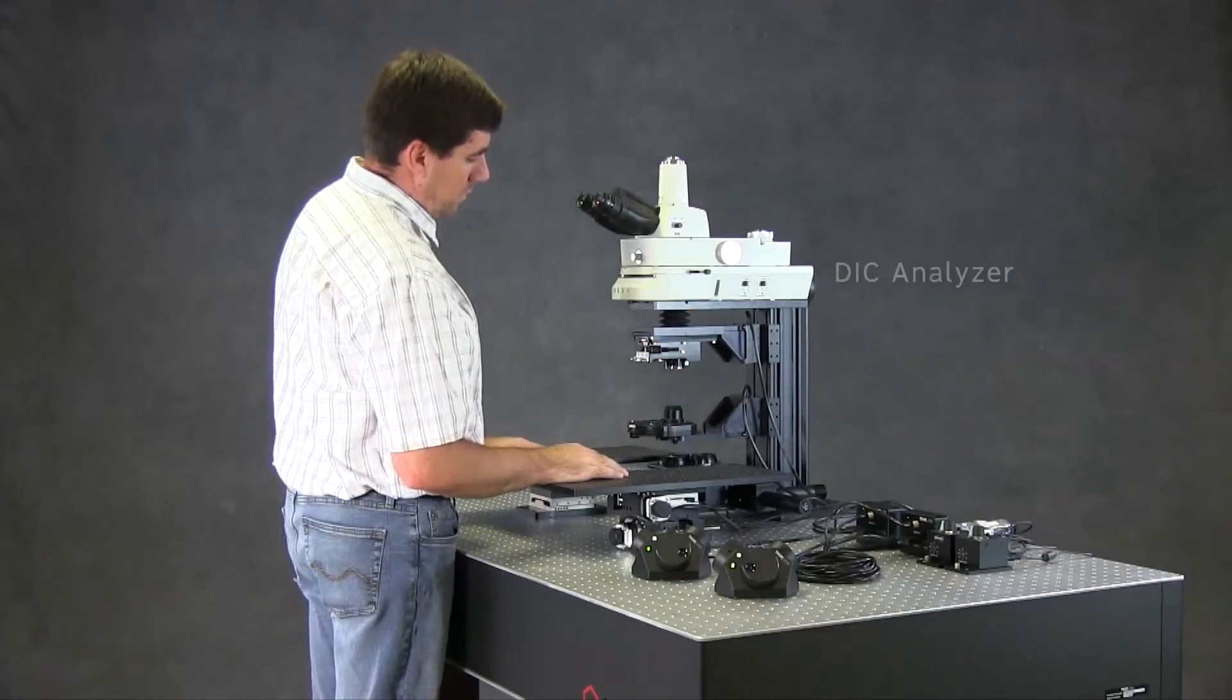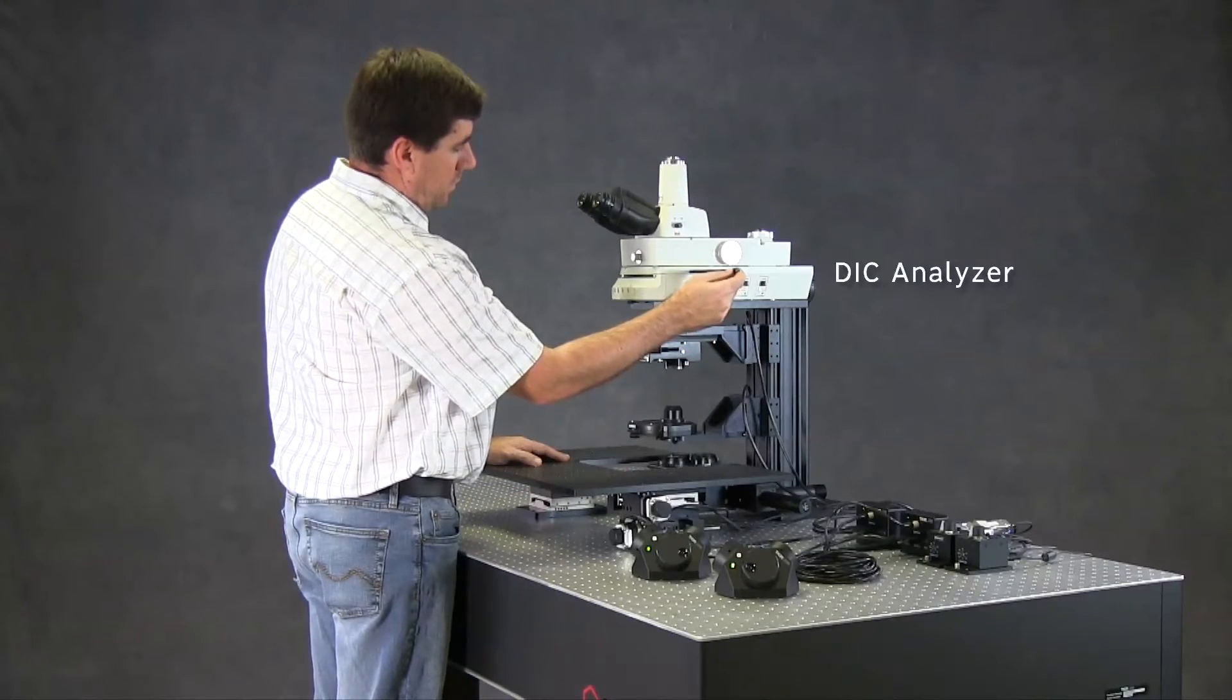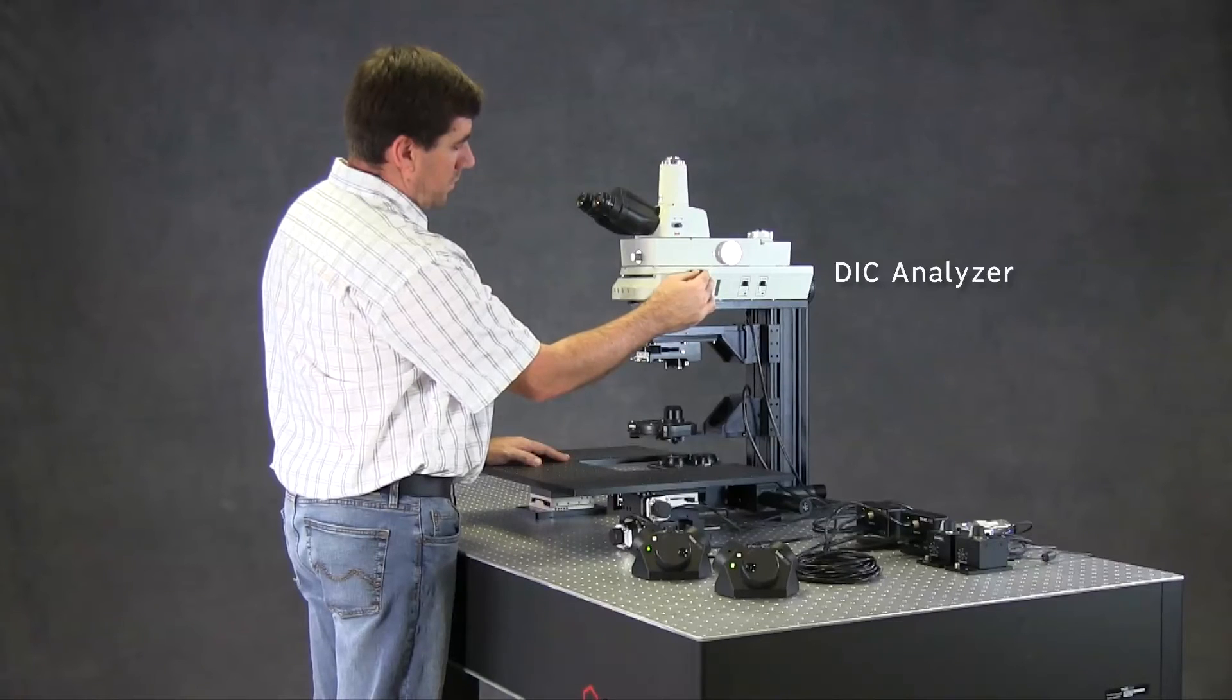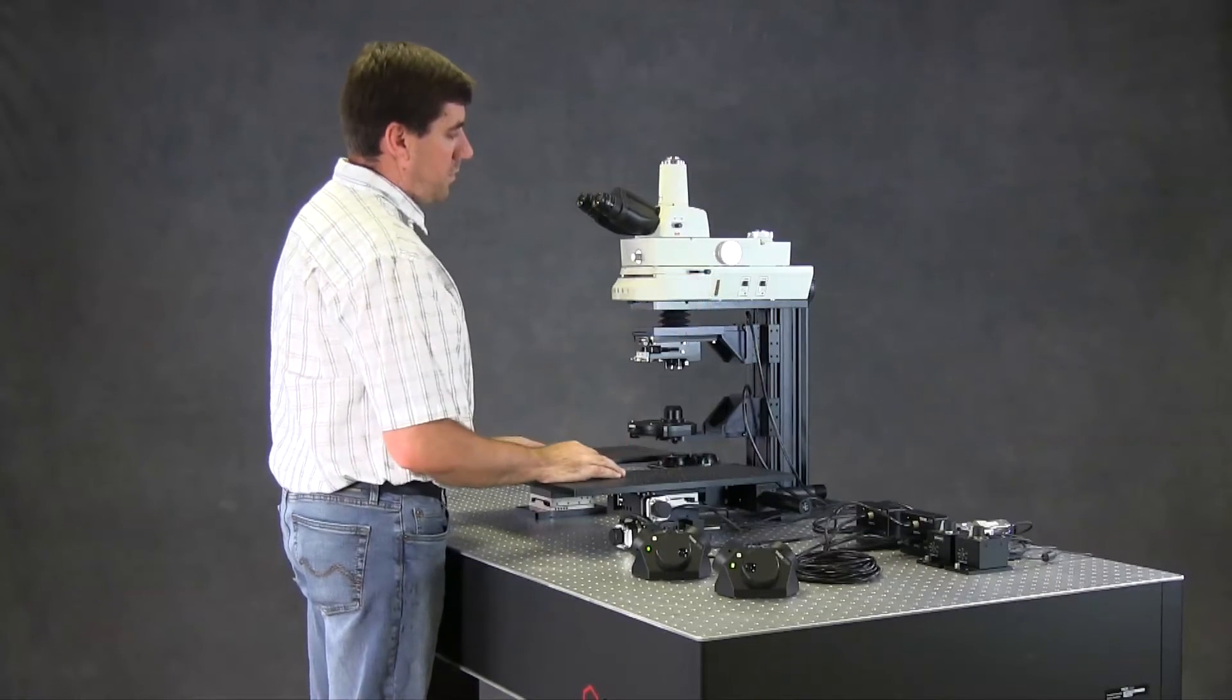For DIC, the microscope includes a DIC analyzer. It contains two polarizers for either visible or NIR DIC.